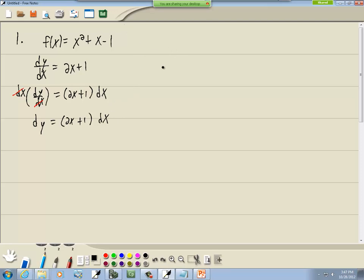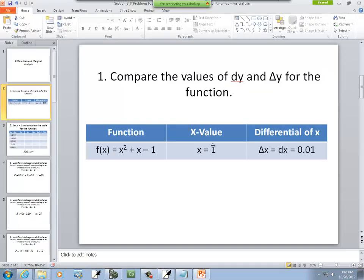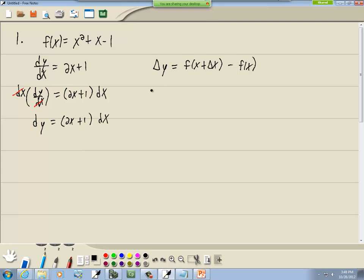Now, the delta y that we're going to be looking at is f of x plus delta x minus f of x. Now, they tell us what x and delta x is here. So, delta y is going to be equal to f of x, which is 1, plus delta x, which is 0.01, minus f of x, which is 1. So that's going to be equal to f of 1.01 minus f of 1.